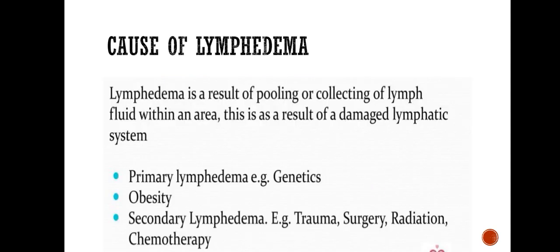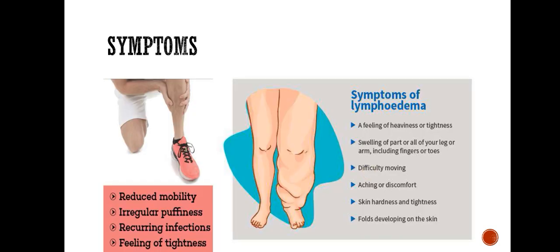Causes of lymphedema: lymphedema results from pooling and collecting of lymphatic fluid within an area due to a damaged lymphatic system — when the lymphatic system is not properly working and drainage is not proper, fluid collects in a particular area leading to swelling. There are two types: primary cause, which is genetic and obesity; and secondary cause, which includes trauma, surgery, and radiation therapy.